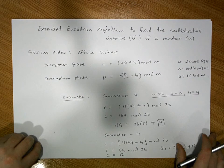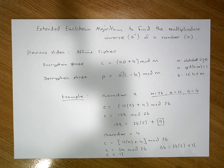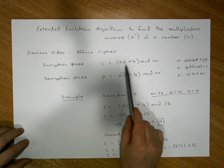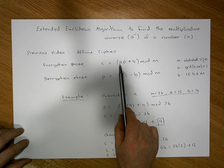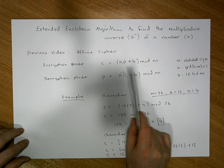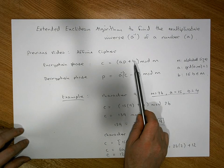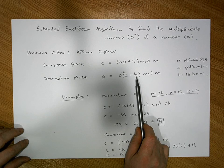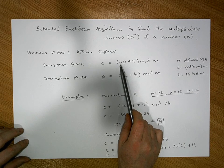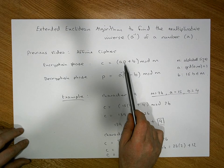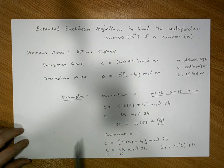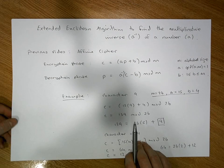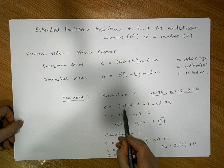The decryption phase requires us to reverse this process. In encryption, we took the plain text, multiplied by a, then added b. So to reverse it, we first subtract b, then instead of multiplying by a, we divide by a. Because we're dealing with integers, we need to calculate the multiplicative inverse of a, written a-inverse. We need to find the inverse of 15 relative to 26.